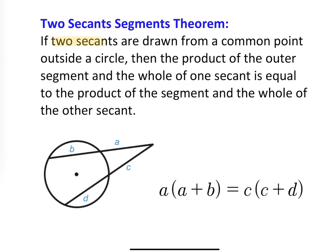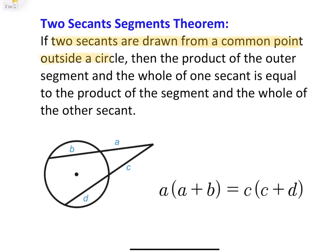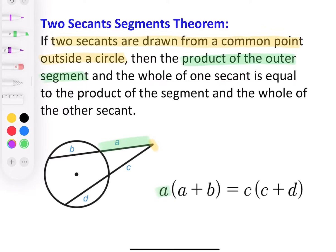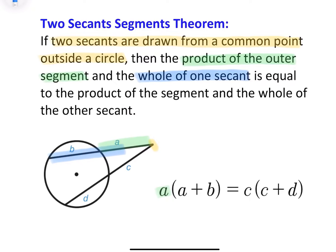We have two secants being drawn from a common point outside a circle. The product means multiplication. So it's the product of the outer segment — the outer piece, which is 'a' — and the whole of that secant, which is 'a' and 'b' combined. So that's our a plus b.